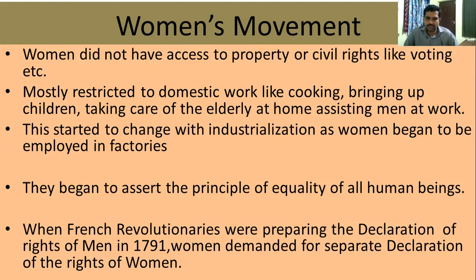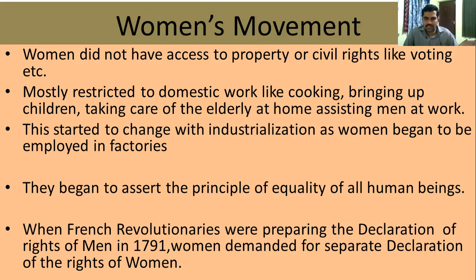Next is the women's movement. Why did women protest and start movements? Women did not have access to property or civil rights like voting. In earlier times, women were not given the right to vote, property, or participation. They were mostly restricted to domestic work like cooking, bringing up children, taking care of the elderly, and assisting men at work. This started to change with industrialization as women began to be employed in factories.